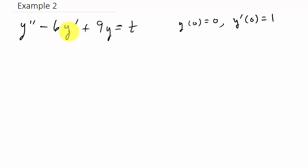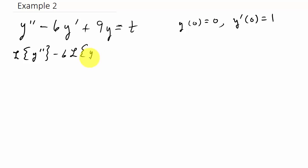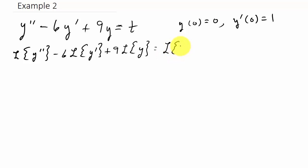Let's start out by taking the Laplace transform of each term. So I get the Laplace transform of y double prime, minus — I'm going to bring the six out — six times the Laplace transform of y prime, and then bring the nine out, plus nine times the Laplace transform of y, equals the Laplace transform of t.